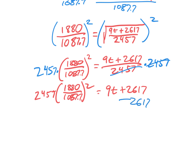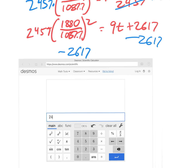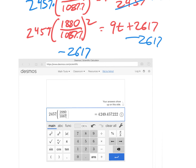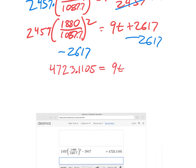Now subtract 2617 from both sides. Let's pull out our calculator. Type in: 2457 times (1880 divided by 1087.7) squared, then subtract 2617. That gives us approximately 4723.1105. When using a calculator and writing intermediate results, use three or four decimal places to stay accurate.